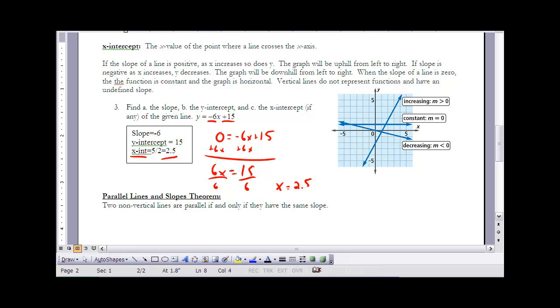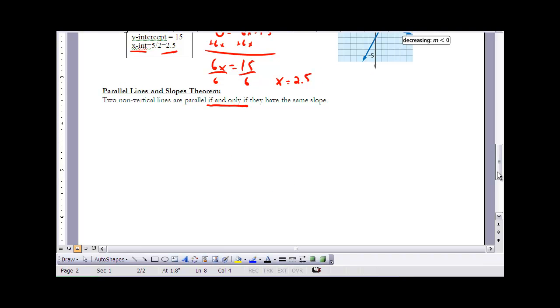The last thing I want to talk about is the parallel lines and slopes theorem. The parallel lines and slopes theorem just says if you have two non-vertical lines that are parallel, or I should say if two non-vertical lines are parallel, they have the same slope. It's a bi-conditional, you'll notice when I wrote it here it's if and only if. So if two non-vertical lines are parallel they have the same slope, if two lines have the same slope then they're parallel. It goes in both directions there, and that concludes the notes for section three one.